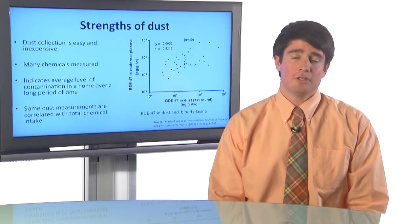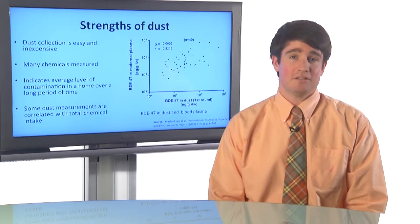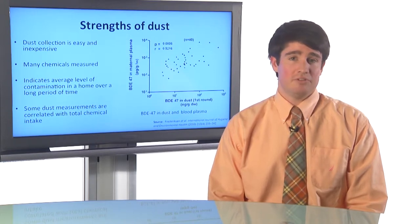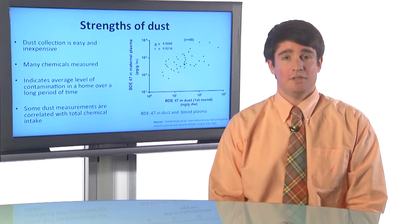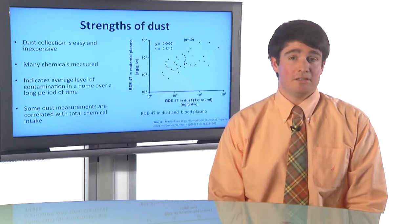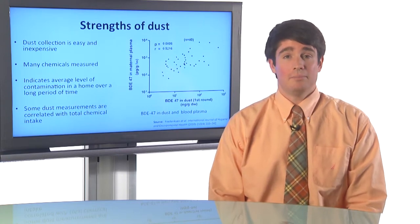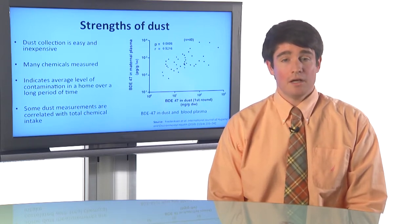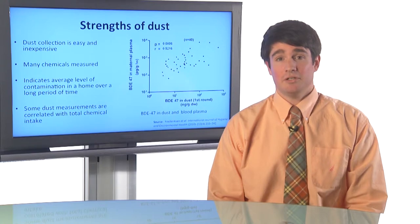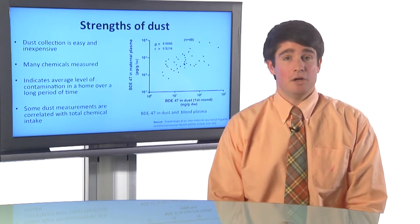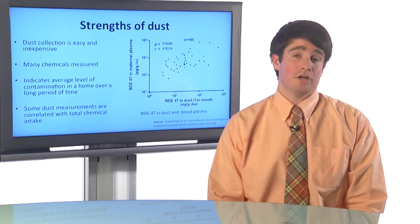The strengths of this approach are that, first and foremost, it's really easy for us to collect the dust that way, and it's inexpensive. We don't have to worry about sending an interviewer to someone's home, setting up visits, or paying for travel — we just have the residents themselves collect the dust for us. We can measure many persistent chemicals in a dust sample like this: flame retardants, pesticides, polycyclic aromatic hydrocarbons — anything that's persistent will accumulate in the dust so we can measure that effectively. These dust measurements will indicate to us the average level of contamination in a home over a long period of time, which could be very useful for a study like ours where we do retrospective exposure assessment — that is, we try to figure out what the children were exposed to after they've already been exposed to it.